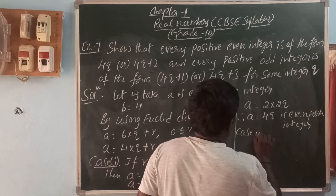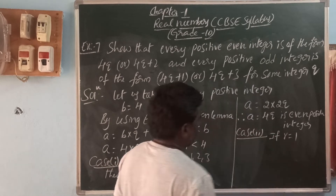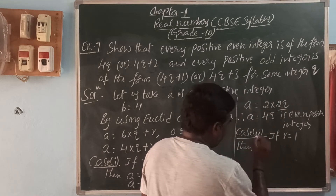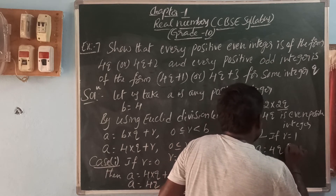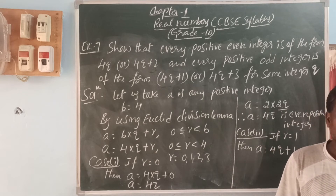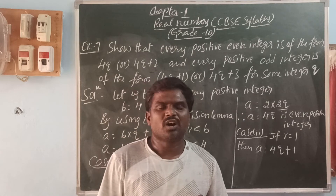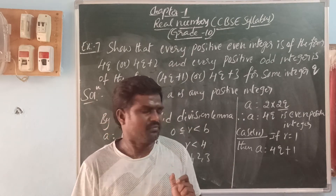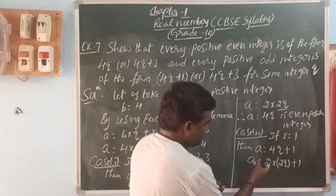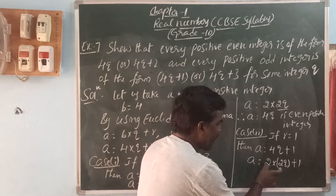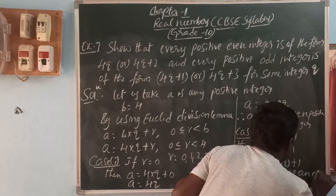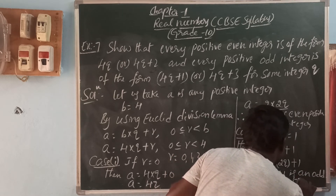Case 2: if remainder equals 1, then A equals 4Q plus 1. We can write this as 2 into 2Q plus 1. So 4Q plus 1 is in the form of multiples of 2 plus 1, meaning the number divided by 2 gives remainder 1. Therefore, A equals 4Q plus 1 is an odd positive integer.